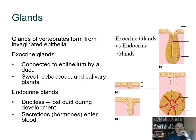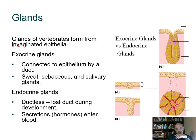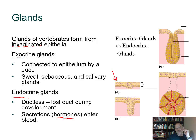Glands are produced from epithelial tissue and develop from epithelium during early development. The surface epithelial cells begin to divide and move inward — a process called invagination. There are two kinds of glands that form this way: exocrine and endocrine. The endocrine gland is associated with the endocrine system and hormones.